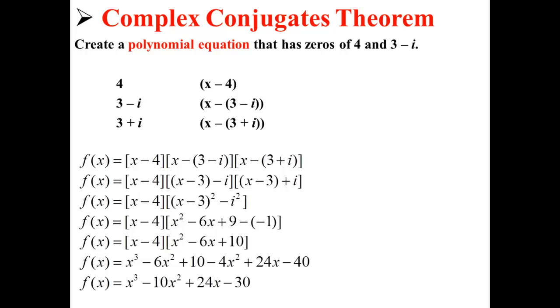Finally, we simplify that fully to get x to the third minus 10x squared plus 24x minus 30. And now we've created a polynomial equation that has zeros of 4, 3 minus i, and 3 plus i.